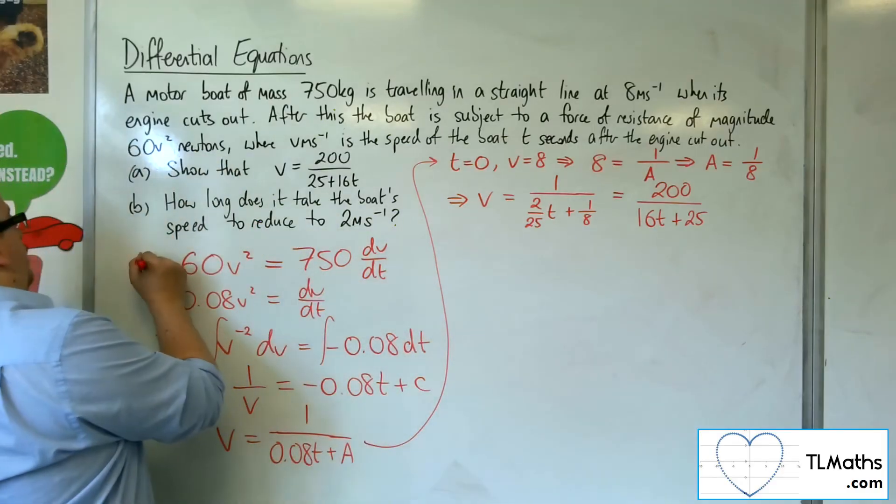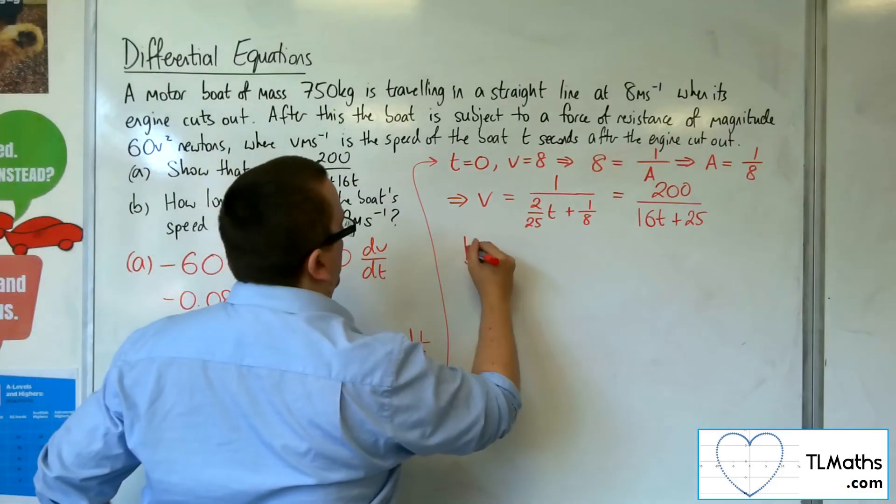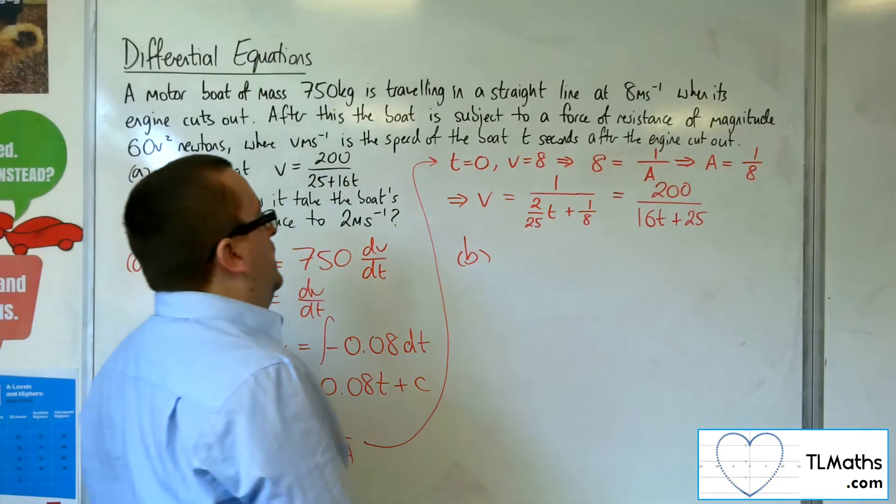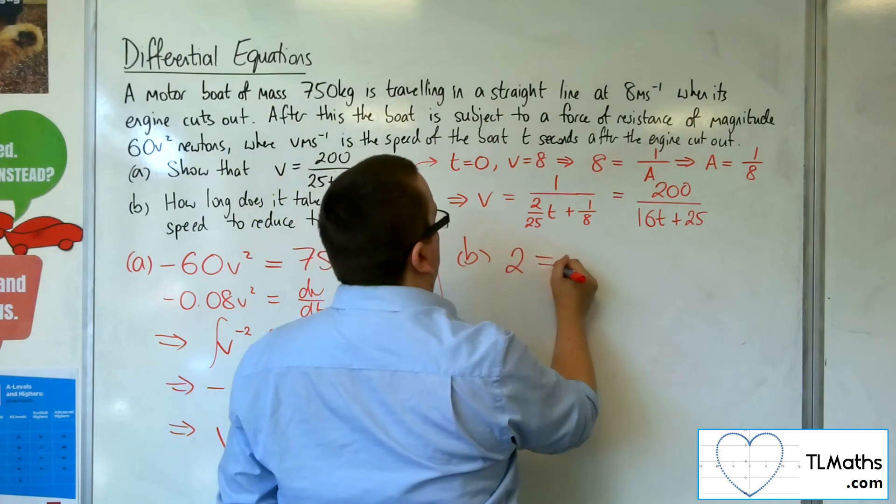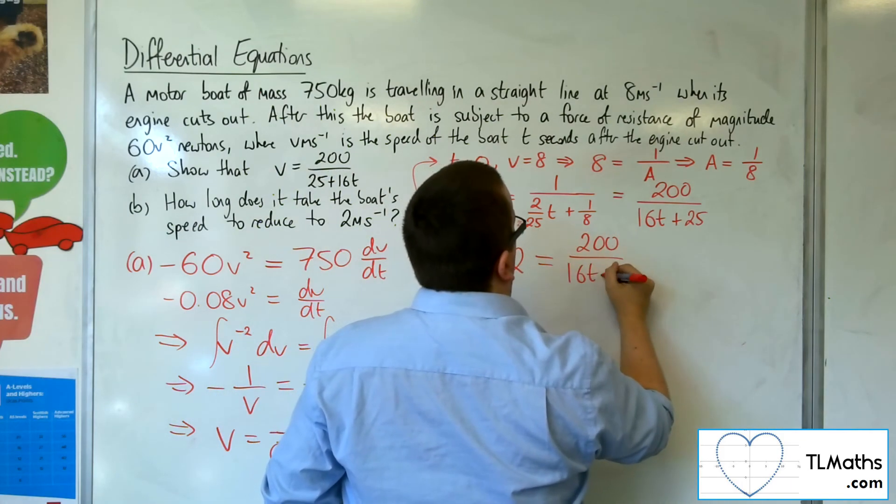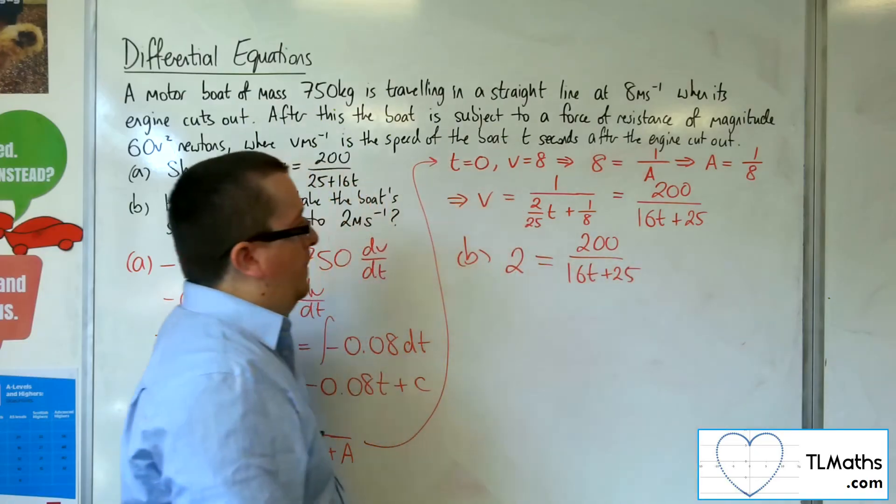Right, so that was A. So then B, how long does it take the boat's speed to reduce to 2 metres per second? So I can just put 2 in, and I need to solve this equation.